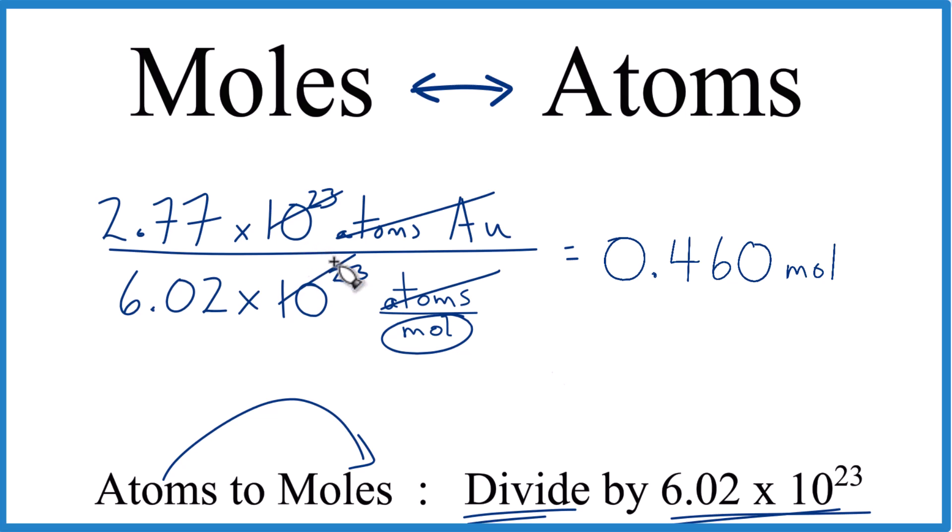I do want to look just briefly at what happens when we have different exponents here, though. So let's say we had 10 to the 13th instead of 10 to the 23rd. So we'd still divide these two numbers to get 0.46. Now we'd subtract. So 13 minus 23, that equals negative 10. So we'd have times 10 to the negative 10th. So you just subtract the exponents, and then you end up with this here. You could change that to scientific notation if you wanted as well.